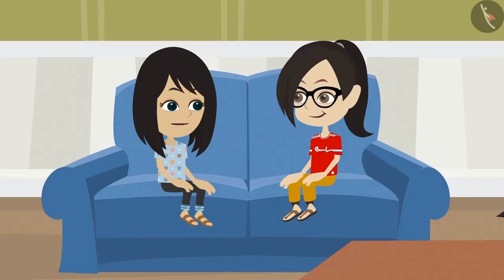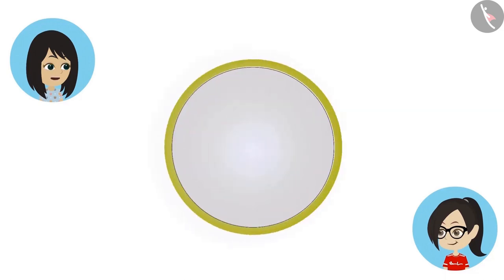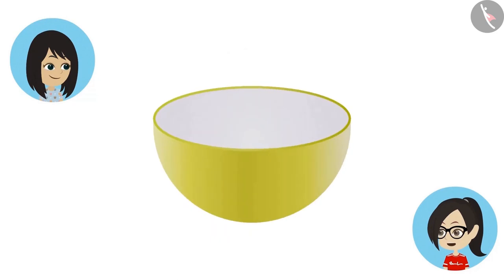Think if the wheels of the cycle are in the shape of a square, how will we ride it? Look at this bowl. This too has a circular shape. Looking at it from the top, it is. But even from the front, it looks like it is made in the shape of a circle.